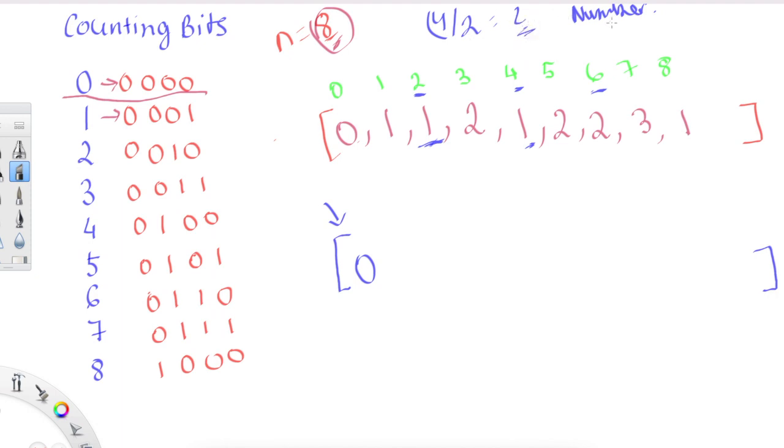The second case is when the number is odd. You notice here that with all the odd numbers, this last bit is always one. That's because two to the power zero is one, so every odd number will always have this extra one.